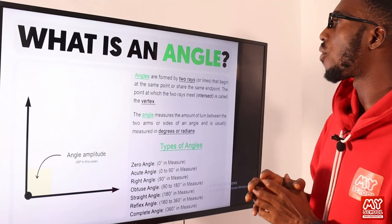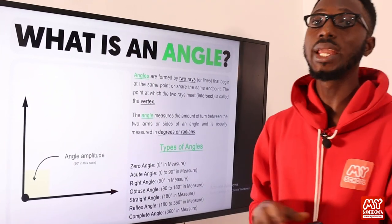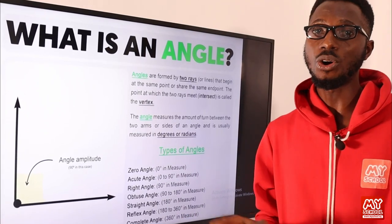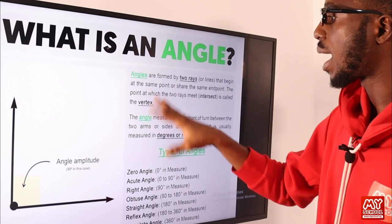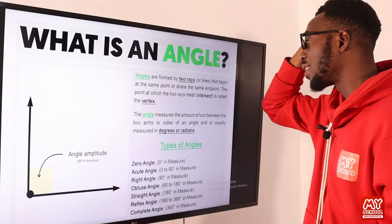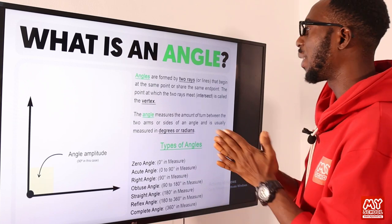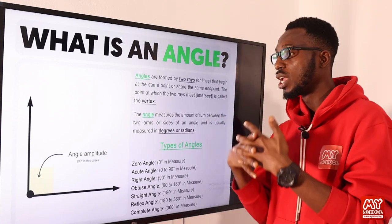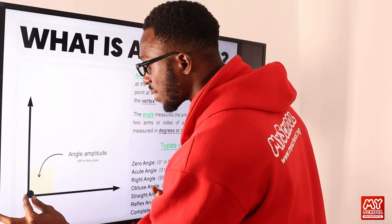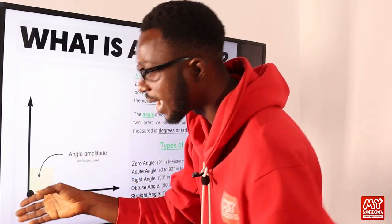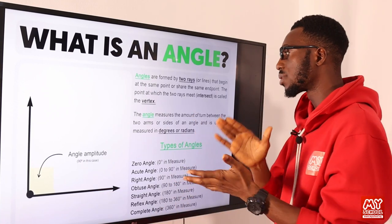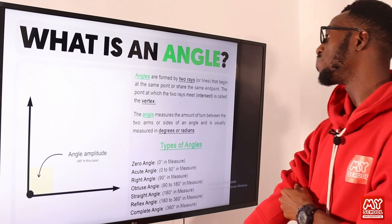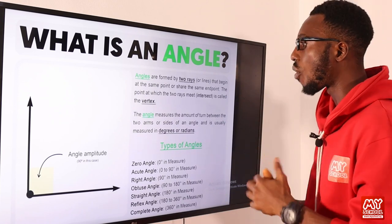We now go to what we call angles. When you talk about geometry and do not refer to angles properly or in detail, it is actually incomplete. Angles are formed by two rays or lines that begin at the same point or share the same end point. The point at which these two rays meet or intersect is what we call the vertex.